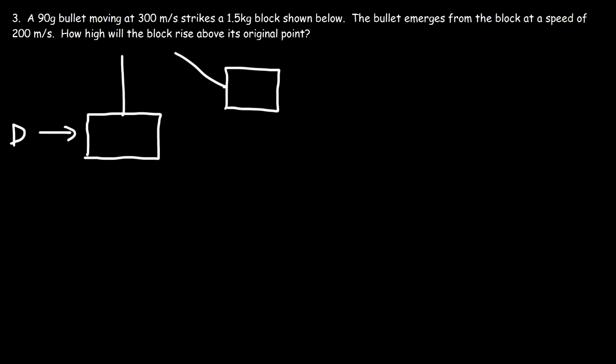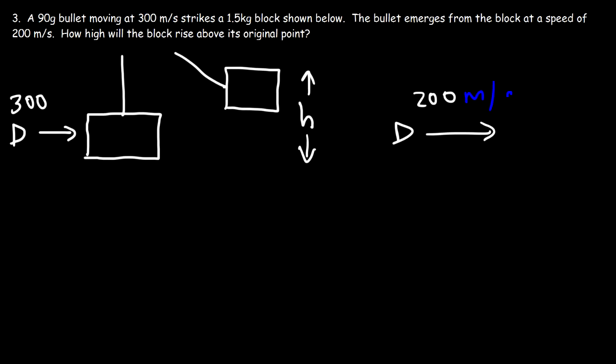Problem three: a 90 gram bullet moving at 300 meters per second strikes a 1.5 kilogram block. The bullet emerges from the block at a speed of 200 meters per second. How high will the block rise above its original point? This is similar to problem one but the bullet is no longer embedded — it emerges. The bullet lost momentum, and that momentum was transferred to the block. We first calculate the final speed of the block, then use that to find the height.